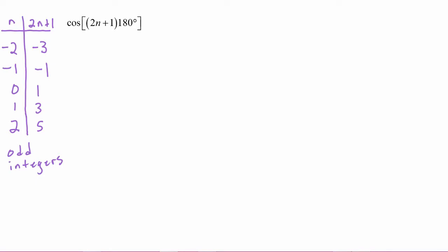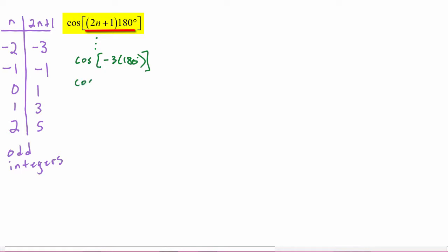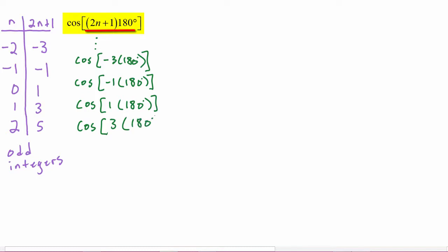So when we evaluate this argument, what we're really doing is taking all of these odd integers — the 2n plus one — and multiplying by 180. So we'd be taking the cosine of negative 3 times 180 degrees, the cosine of negative 1 times 180 degrees, the cosine of positive 1 times 180 degrees, the cosine of 3 times 180 degrees, and so on. Let's see where those angles live.